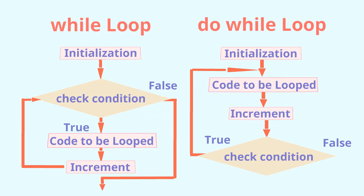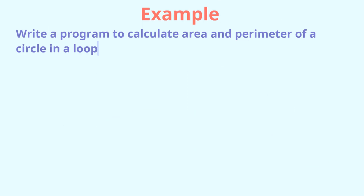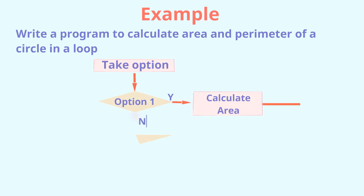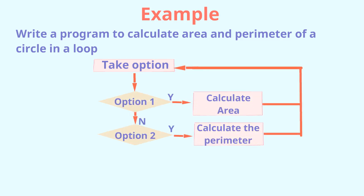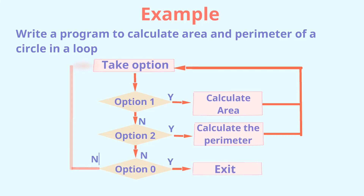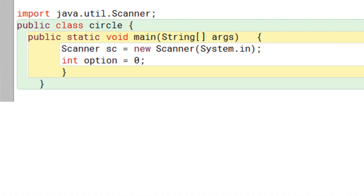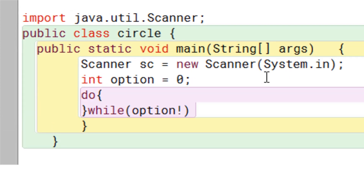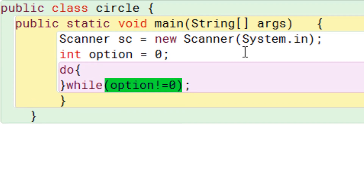Let's see this with an example. Suppose you are asked to take some option from the user — write a program to calculate the area and perimeter of a circle in a loop. If the user enters one, calculate the area; two, calculate the perimeter; and zero if the user wants to quit. Remember, you will use this loop in most menu-driven programs where the user continually wants to do something until they want to exit.